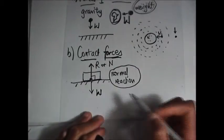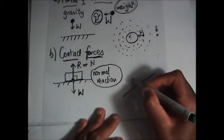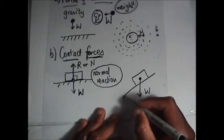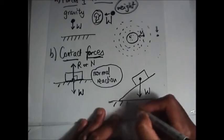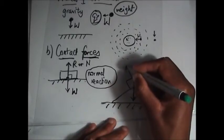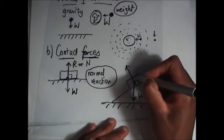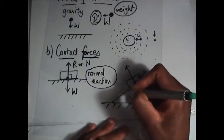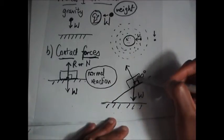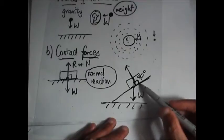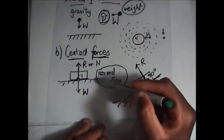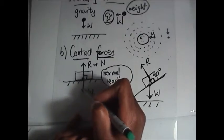That point is very important — the reaction acts perpendicular to the surface of contact, at 90 degrees. On an inclined plane, if we put our book on it, weight acts vertically downwards towards the ground. But the reaction force always maintains the 90-degree angle with the contact surface. So on an inclined plane, the reaction faces at an angle, while weight remains vertically downward.